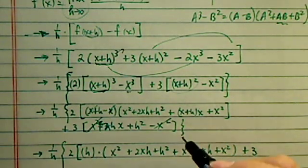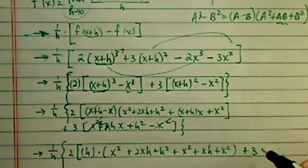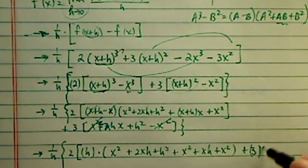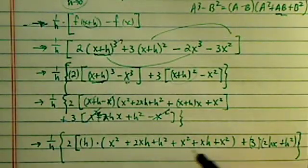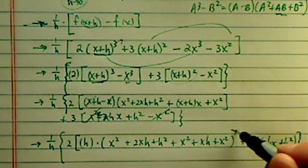I have 2. Let's see what kind of mess we have over here. x is canceled out, so I have h times, let's see what I have here. x squared, plus 2xh plus h squared plus x squared, again, plus another xh, plus another x squared. That's all I have here. And then plus 3, let's see, times 2hx plus h squared. This is the whole thing.